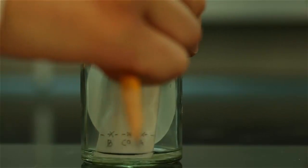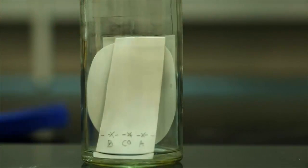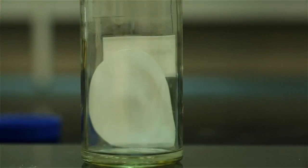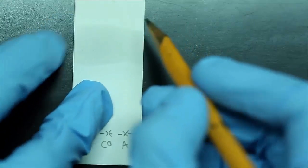Quickly remove the plate from the jar when the solvent reached approximately 1 cm from the top. Be sure to mark a dotted line where the solvent reached before it evaporates.